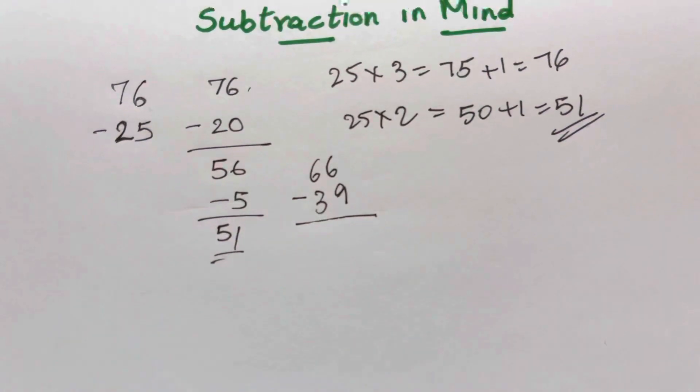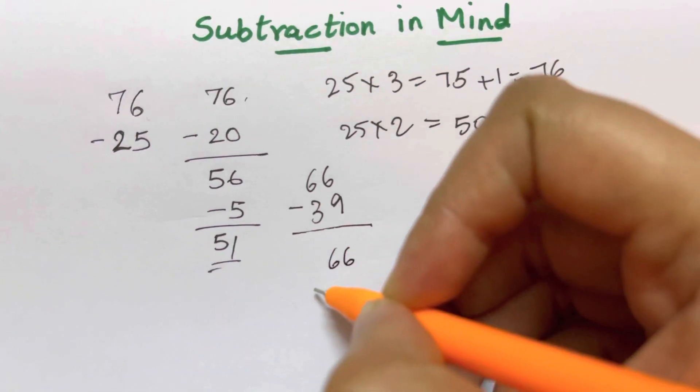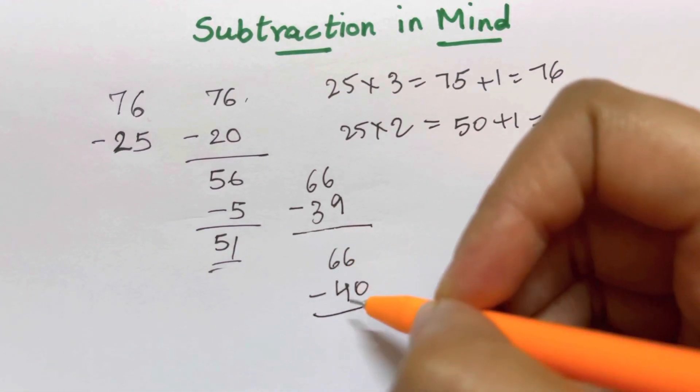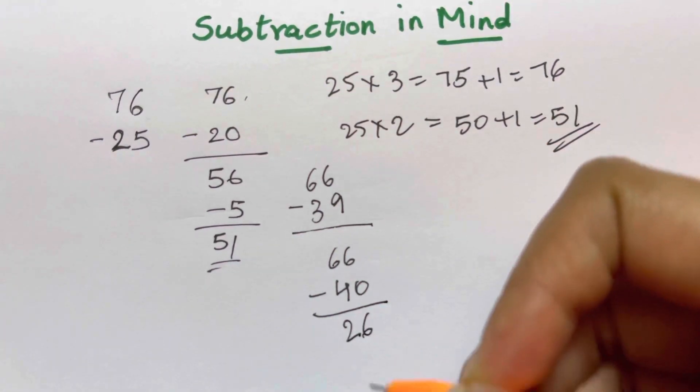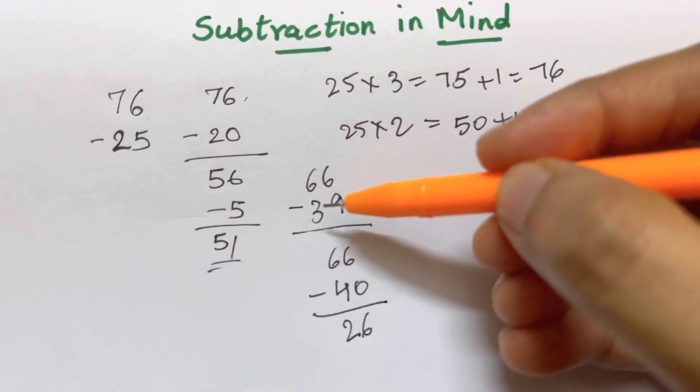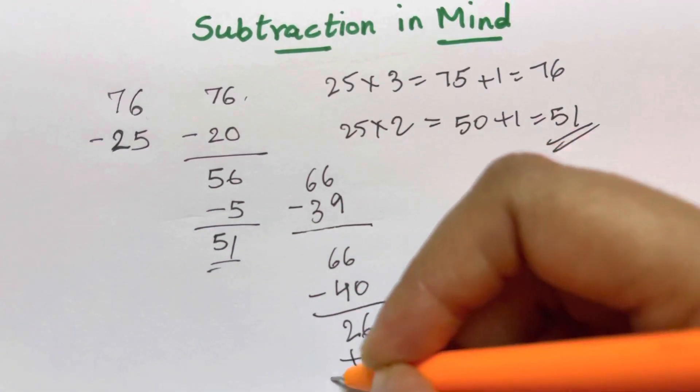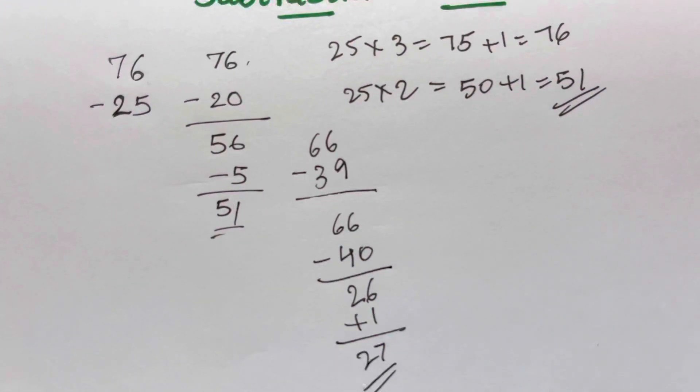66 minus 39. So you are going to round off 39 to 40. 66 minus 40. You have added 1 to make it 40. Now 6 minus 4 is very easy for you. That's 20 and 6, 26. Now you have subtracted 1 more. So you're going to add it back. 26 plus 1, 27 is your answer. Quickly, in mind, that's 27.